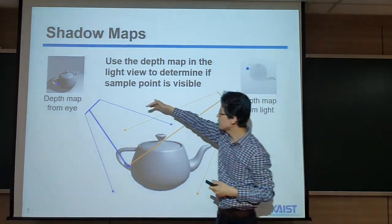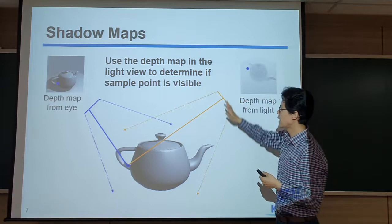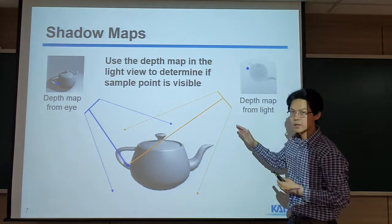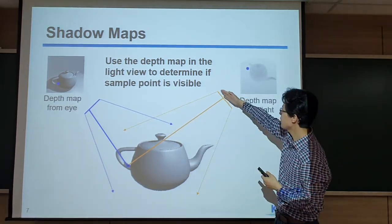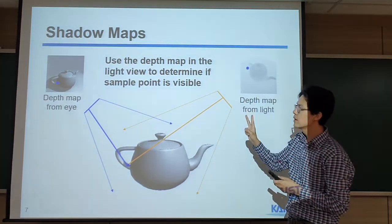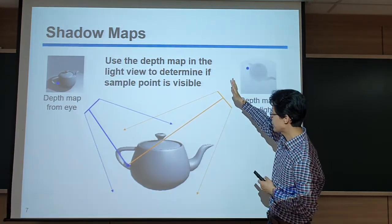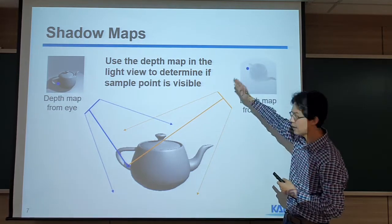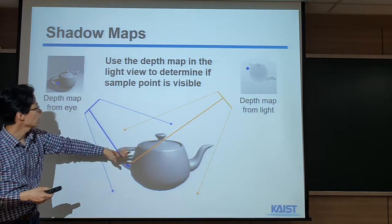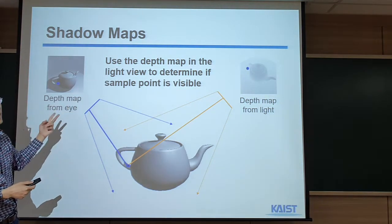To do that, within rasterization, we first rasterize this triangle in the perspective of the light source. The shadow mapping technique is a two-pass algorithm, since we need to rasterize each triangle twice. First, we rasterize the triangle in the perspective of the light source, then we utilize that information when we rasterize the triangle again from our viewpoint. That's why we render this scene twice.